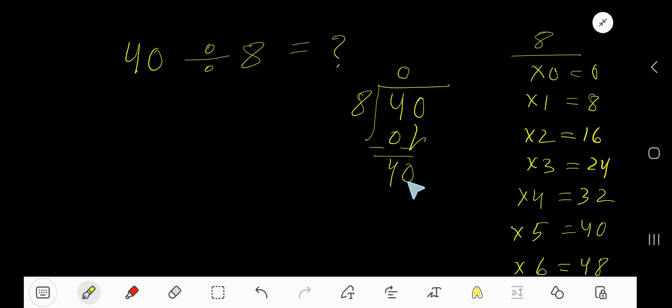It goes into 40 how many times? 5 times. 5 times 8 is 40. Subtract, 0. Our remainder is 0, so we are done. The answer is 5.